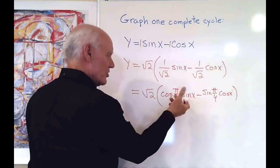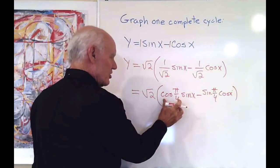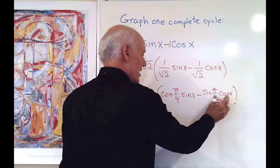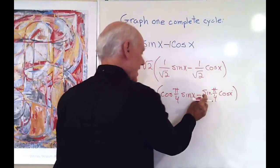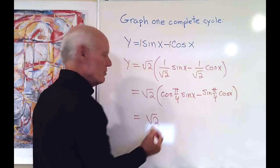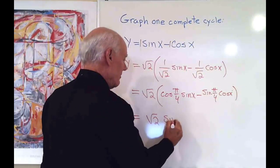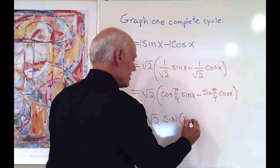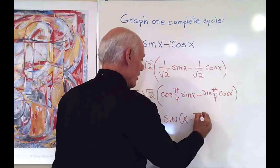So this would be cosine pi over four sine x minus sine pi over four cosine x. And then I see I can reverse these and make it sine x cosine pi over four minus cosine x sine pi over four. I have the subtraction sign here. That means that this is square root two times the sine of x minus pi over four.